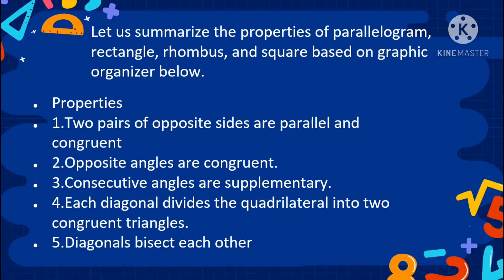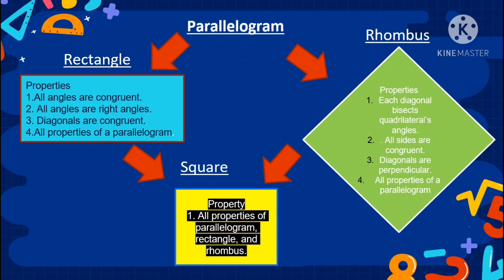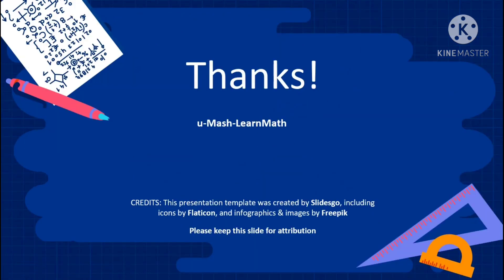Let us summarize the properties of a parallelogram, rectangle, rhombus, and square based on the graphic organizer. Properties include: two pairs of opposite sides are parallel and congruent, opposite angles are congruent, consecutive angles are supplementary, each diagonal divides the quadrilateral into two congruent triangles, and diagonals bisect each other. These apply to the parallelogram, rectangle, rhombus, and square. Thanks for watching!